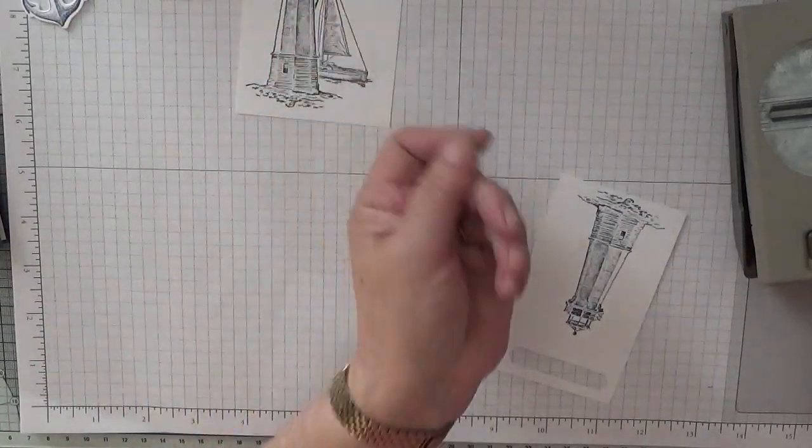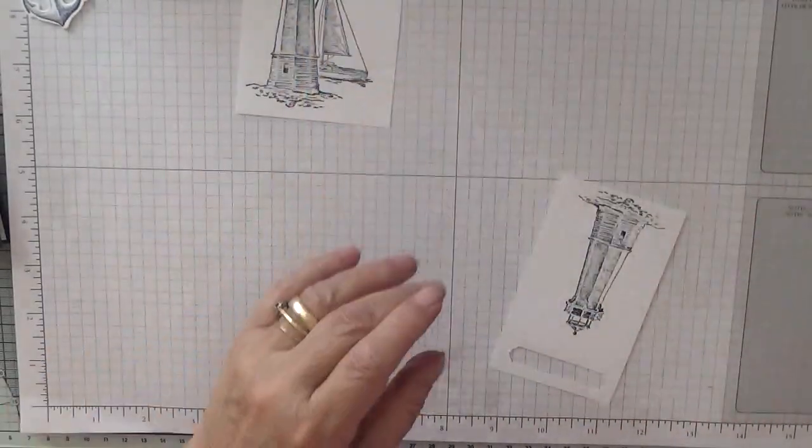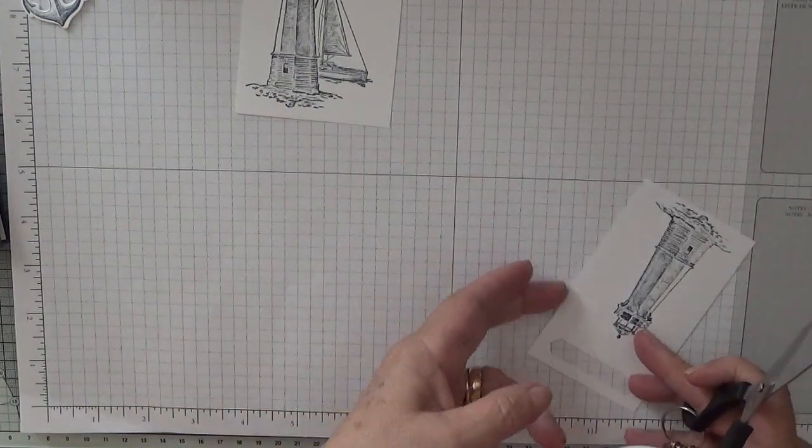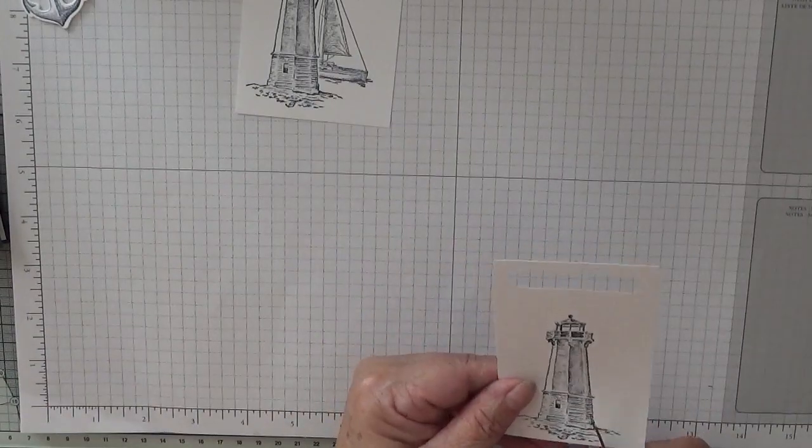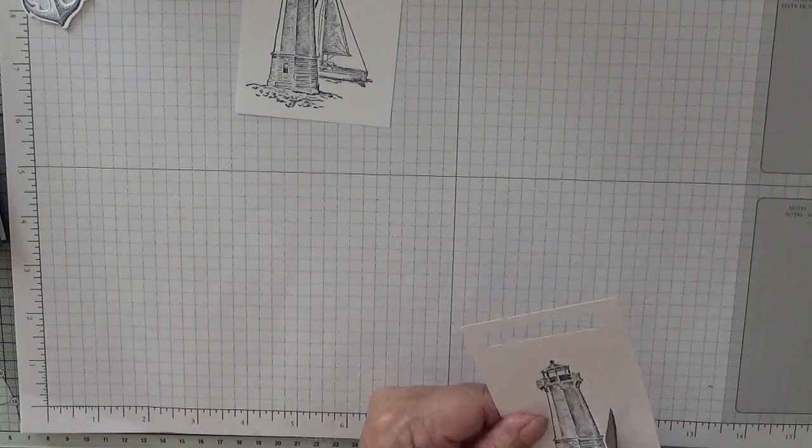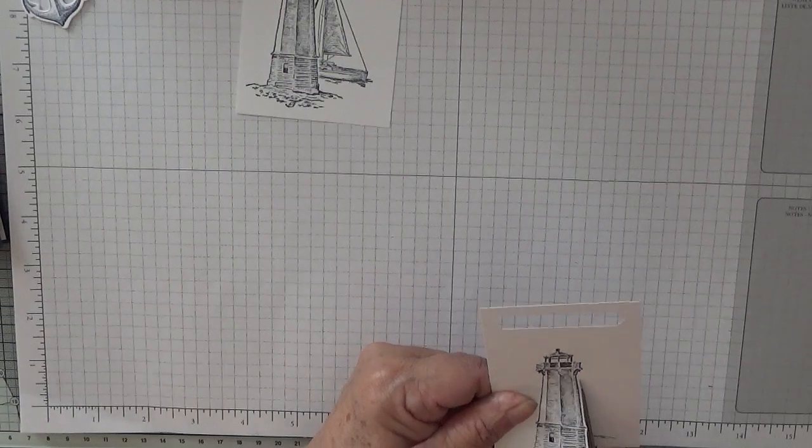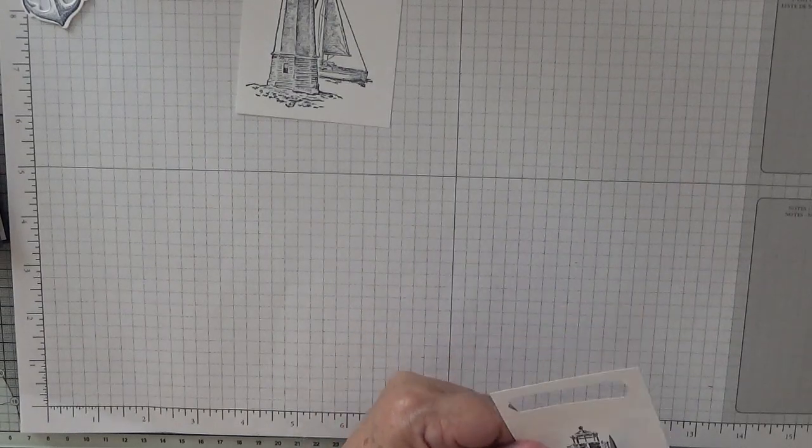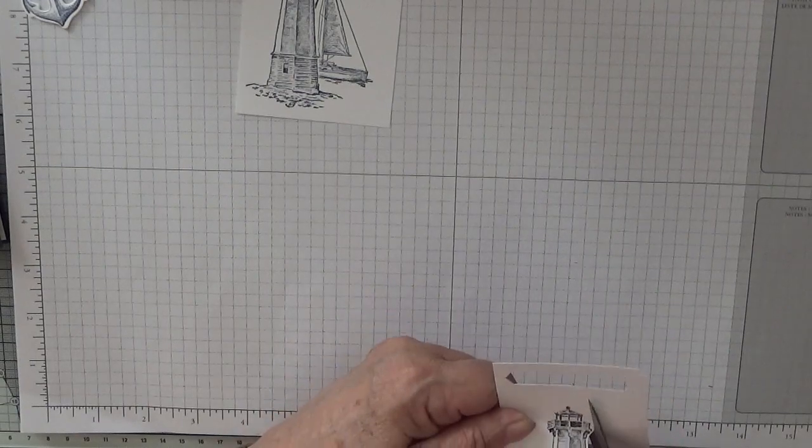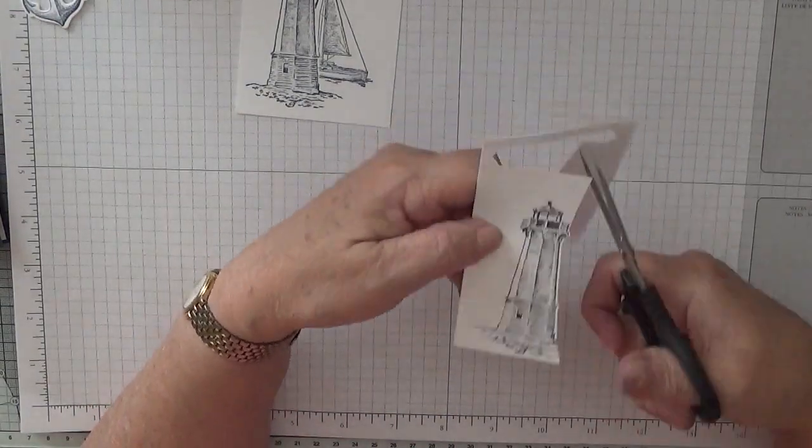And then with the paper snips we need to cut this lighthouse out which is quite easy to do because it's mainly straight. Because it's mainly straight she says when she comes to let them look straight lines. Off camera as usual.